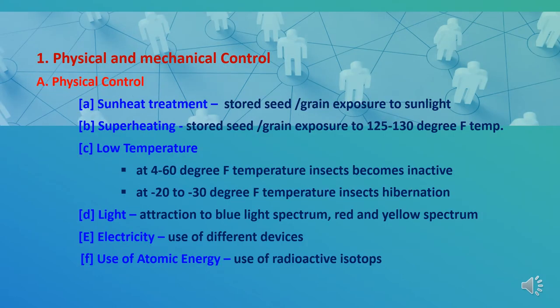The first method is physical and mechanical control. Physical control methods are a combination of various treatments. First is sun heat treatment, where stored grains are exposed to sunlight to drive out humidity. Second is superheating — insects may not survive if exposed to temperatures of 140 degrees Fahrenheit. Pests of coffee, clothing, cotton balls, logs, and stored grains can be killed by 3 hours exposure to 125–130 degrees Fahrenheit. Incubators can also be used for this purpose.